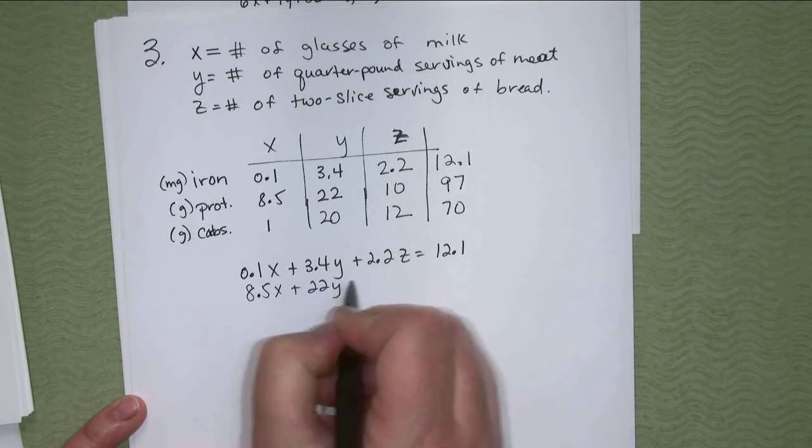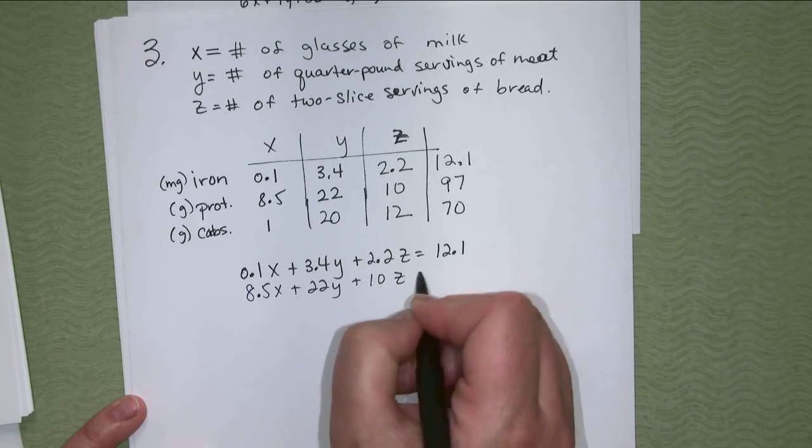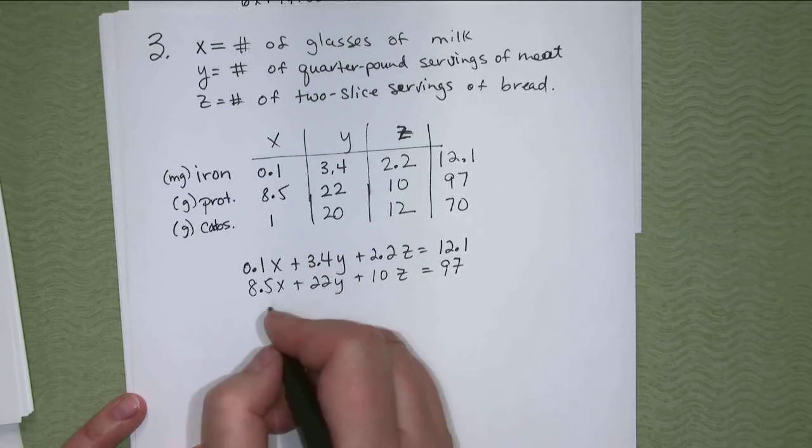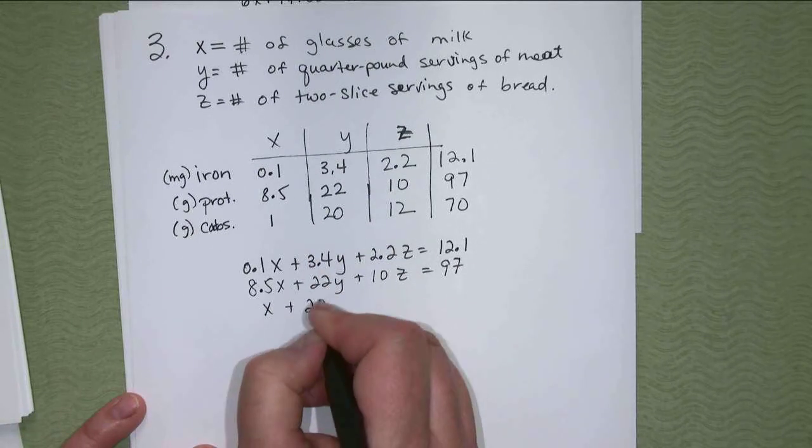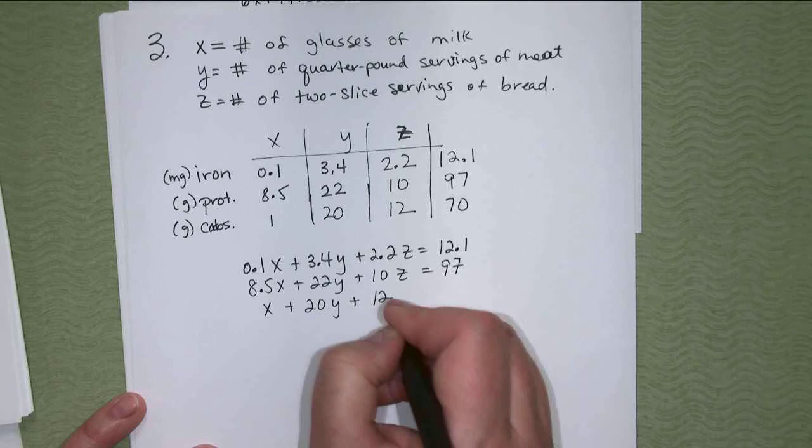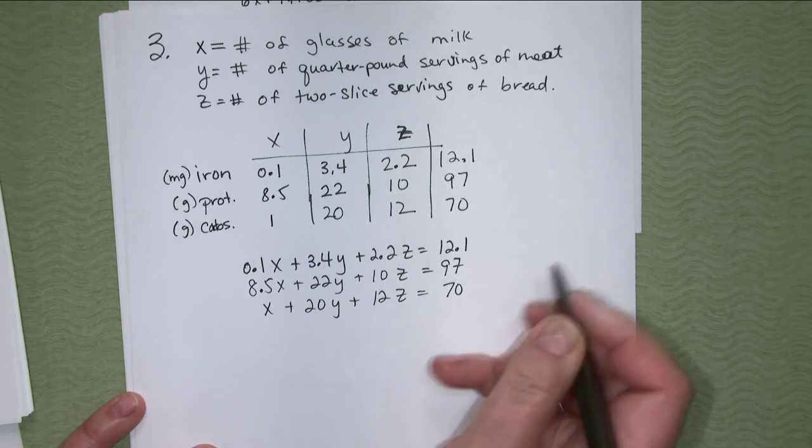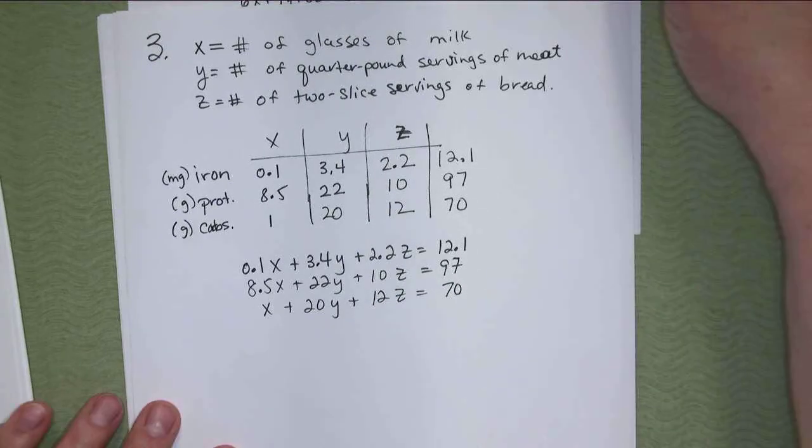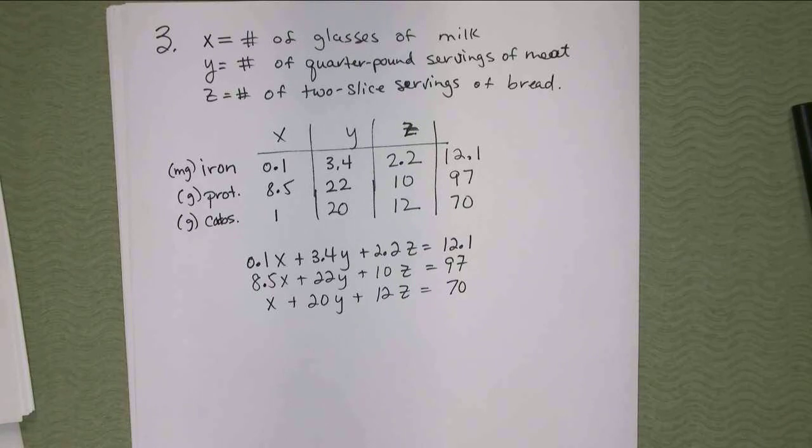So the totals, it says they must have 12.1 milligrams of iron, 97 of protein, and 70 of carbs. And then you just set the equations up from there. If there are three variables, does that mean you only have three equations? There usually is. But no, there doesn't have to be.